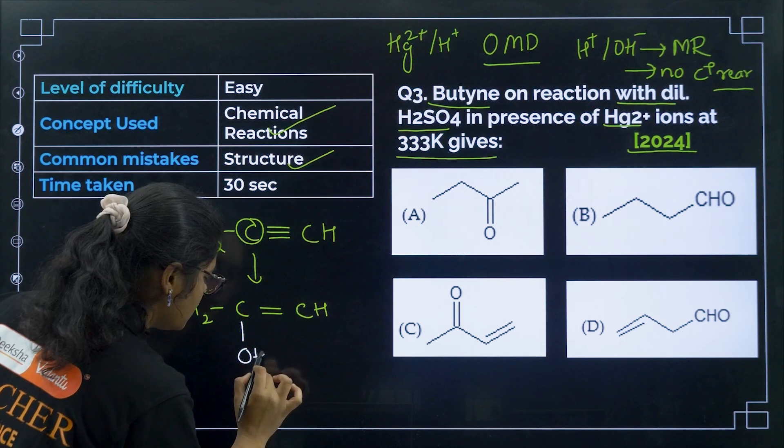Question 30 from 2015: formation of cyanohydrin from a ketone is an example of nucleophilic addition reaction — option number A. Next question from 2015: iodoform can be prepared from all except? For iodoform, we need CH₃CO or CH₃CHOH group. Propan-1-ol (CH₃CH₂CH₂OH) does not have the CH₃CHOH group, so it cannot give iodoform. Correct answer is option number D.